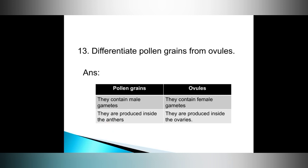Question number thirteen: differentiate pollen grains from ovules. Answer: pollen grains are produced inside the anthers, while ovules are produced inside the ovaries.